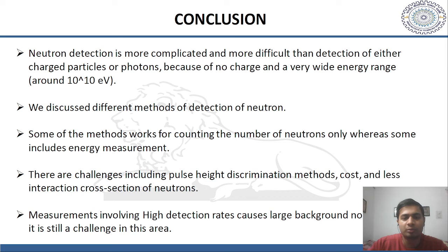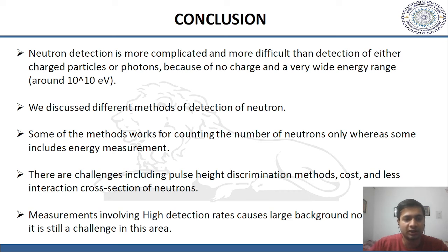Neutron detection is more complicated and more difficult than detection of either charged particles or photons, because of the lack of charge and a very wide energy range of around 10^10 electron volts. We have discussed different methods for detection of neutrons — some methods work only for counting the number of neutrons while others include energy measurements. Challenges include pulse height distribution methods, cost, low interaction cross-sections, and the fact that measurements involving high detection rates cause large background noise, which remains a challenge.